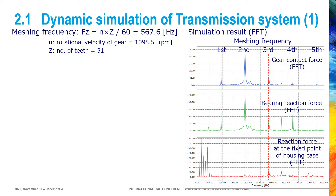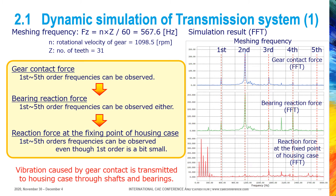The graph on this page shows FFT results of gear contact force, bearing reaction force, and reaction force at the fixed point of the housing case. In this simulation model, meshing frequency is 567.6 Hz. In the gear contact force FFT, five peaks can be observed which are harmonics of first to fifth orders. These five peaks at harmonic frequencies can also be observed for bearing reaction force and for the reaction force at the fixed point of the housing case, even though the first order peak is a bit small. From these results, it is clear that vibration excited by gear contact is transmitted to the housing case through shafts and bearings.